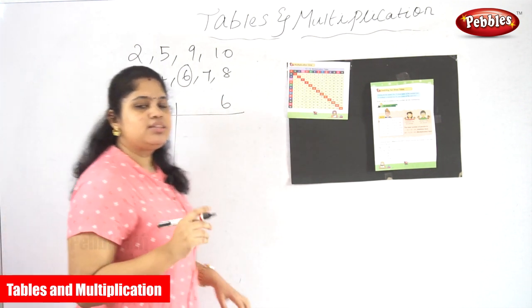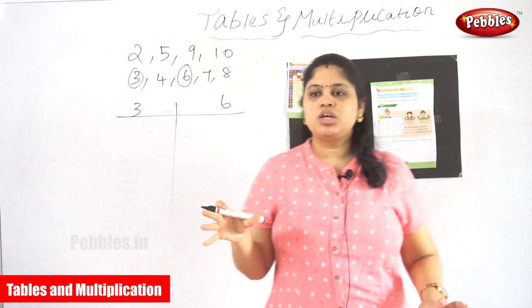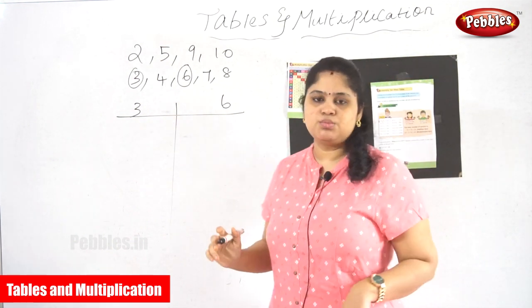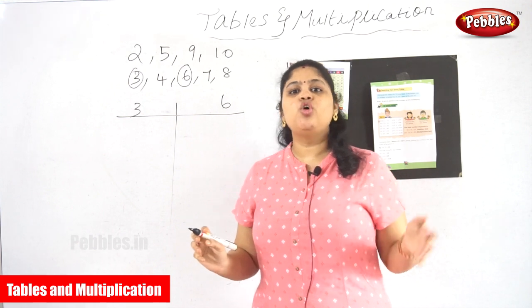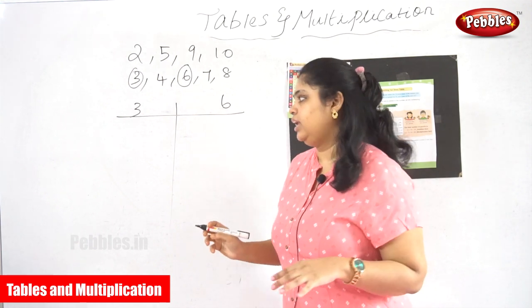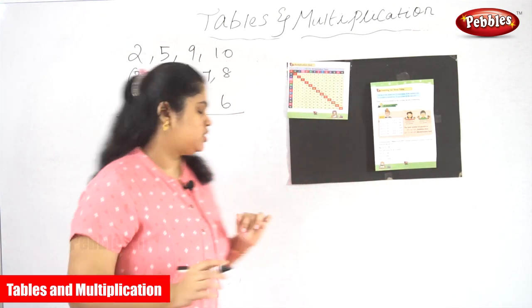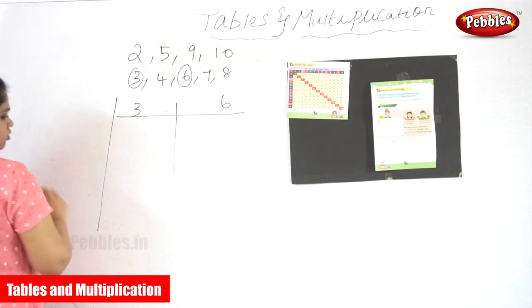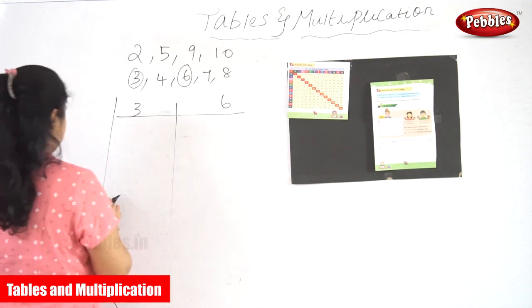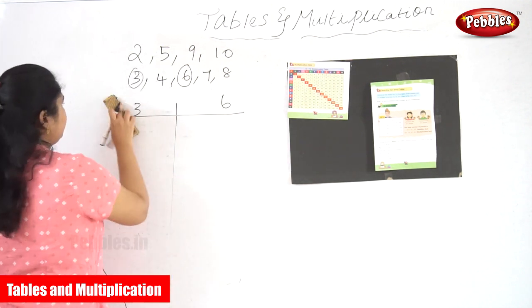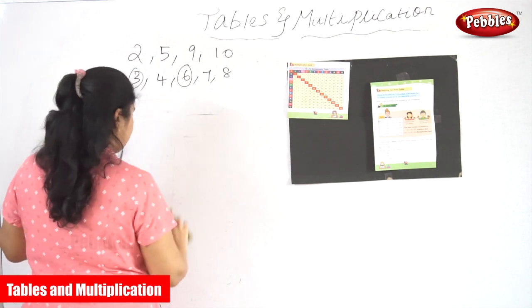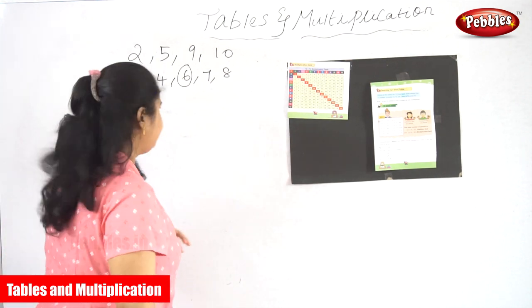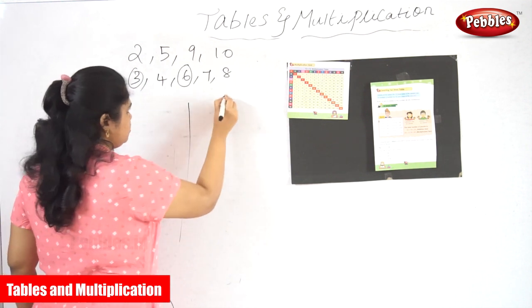What is the reason? What is the main reason we have chosen 3 tables and 6 tables? We already know about the second table, isn't it? So I'm just writing the second table for reference. For the third table, for a reference, I'm writing the second table.